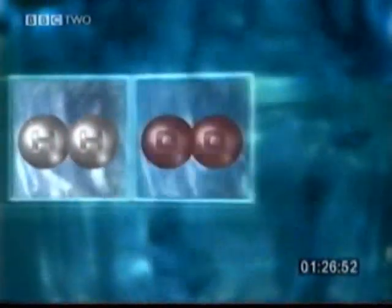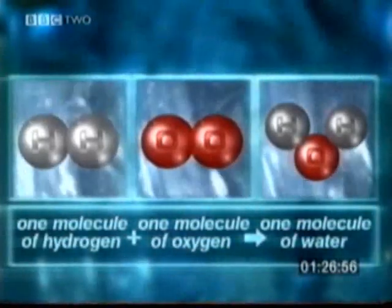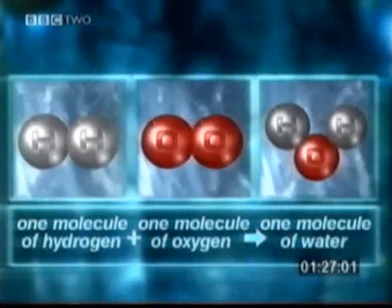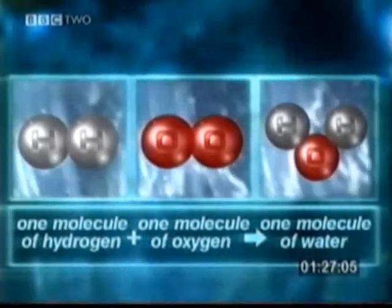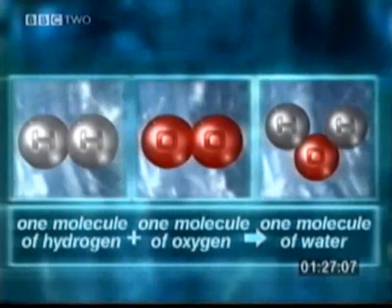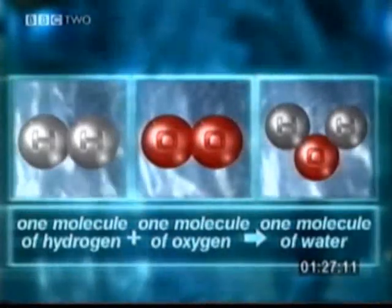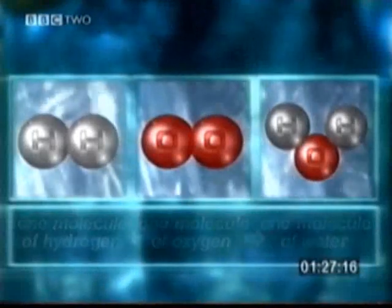Water is a compound and it's made of two elements, hydrogen and oxygen. The two atoms in a molecule of hydrogen combine with one of the two atoms in a molecule of oxygen to form a molecule of water. The other oxygen atom combines with another molecule of hydrogen. So water has the chemical formula H2O.